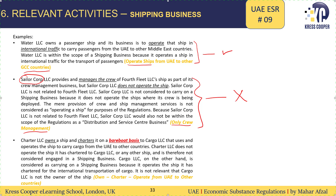In the third example, Charter LLC owns a ship and charters it on a bare boat basis to Cargo LLC. Cargo LLC is operating the ship — Charter LLC is only the owner giving the ship on lease without crew. Therefore, Charter LLC will not be subject to ESR. The party operating the ship, which is Cargo LLC, will be subject to ESR.